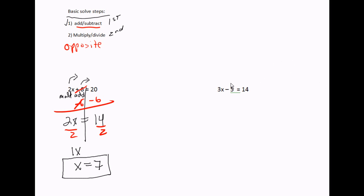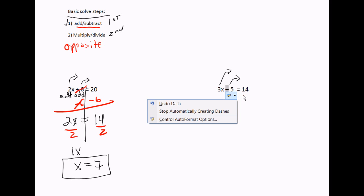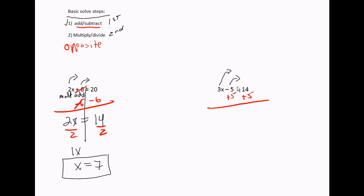In the last problem, I want to get rid of the five to the other side and get rid of the three. Do the additions and subtractions first. This is a minus five and the three is times. We're going to do the minus five first — the opposite of minus five is plus five — so we're going to add five to both sides.